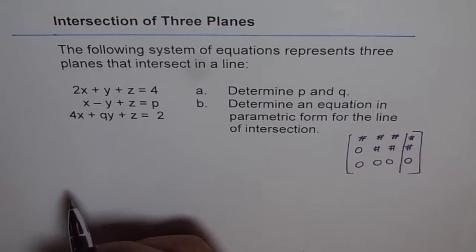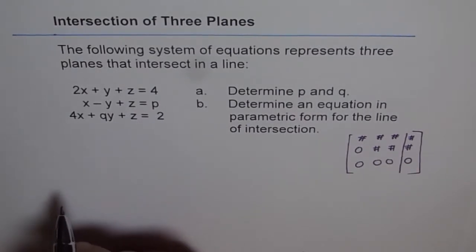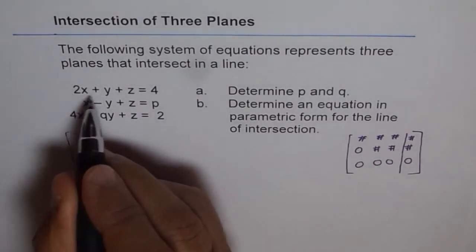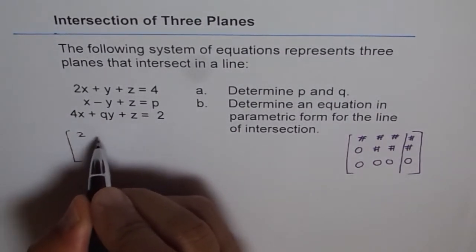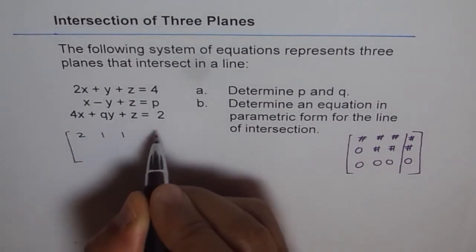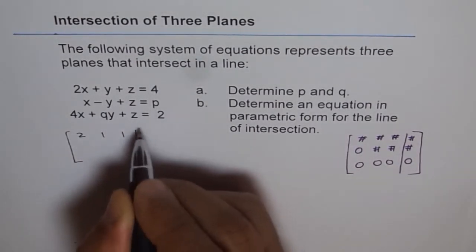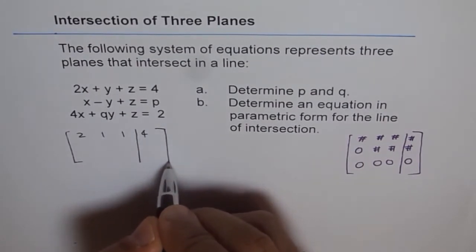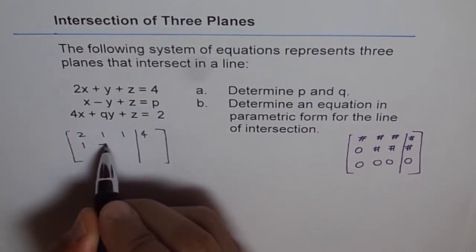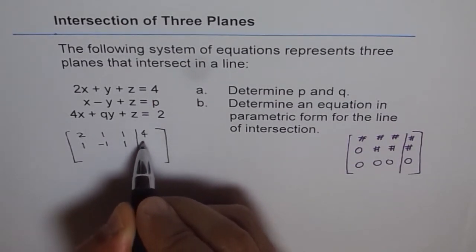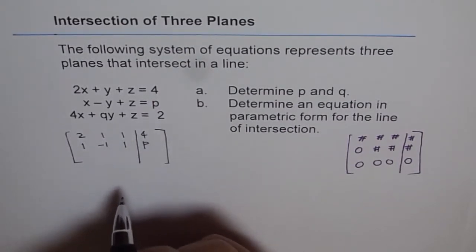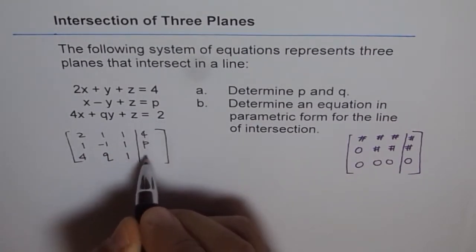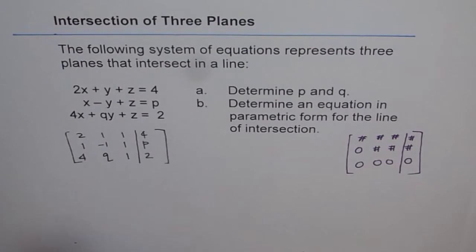Let's first write down our augmented matrix from the given equations. We write 2, 1, 1 — these are the coefficients of x, y, and z — with 4 on the right side. For the second equation: 1, minus 1, 1, equals p. We need to find p. The third row is 4, q, 1, equals 2. We need to find the value of q.